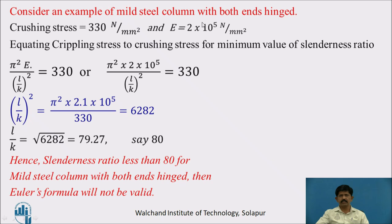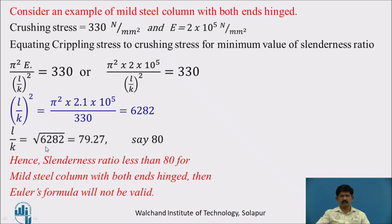For example, consider a mild steel column with both ends hinged, having a crushing stress of 330 N/mm² and modulus of elasticity 2×10⁵ N/mm². Equating the crippling stress to the crushing stress: π²E / (L/k)² = 330. Substituting E, we get (L/k)² = π² × 2.1×10⁵ / 350. Taking the square root, L/k ≈ 79.27, approximately 80. Hence, if the slenderness ratio is less than 80 for a mild steel column with both ends hinged, Euler's formula is not valid — it gives a crippling load greater than the crushing load.